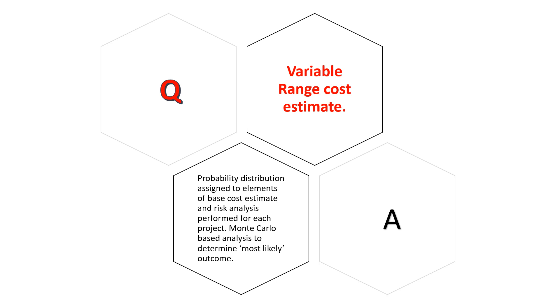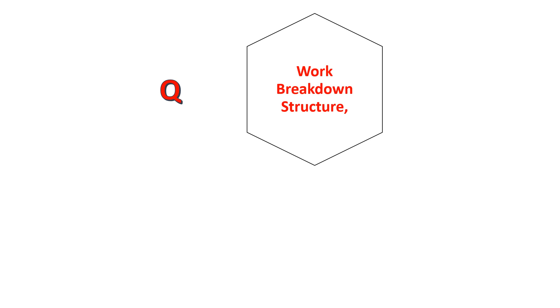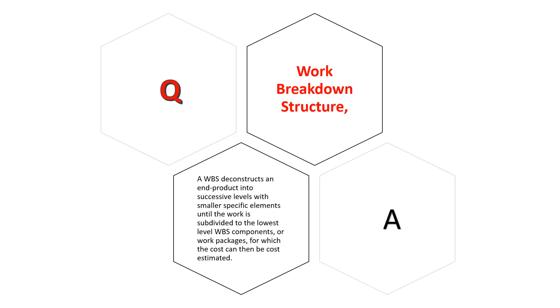Work breakdown structure: A WBS deconstructs an end product into successive levels with smaller specific elements until the work is subdivided to the lowest level WBS components, or work packages, for which the cost can then be cost estimated.